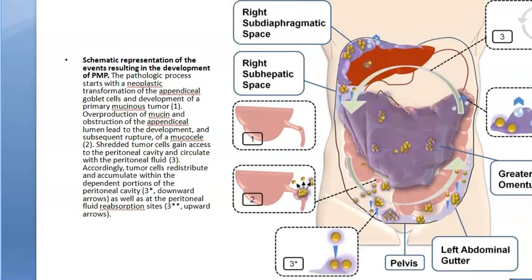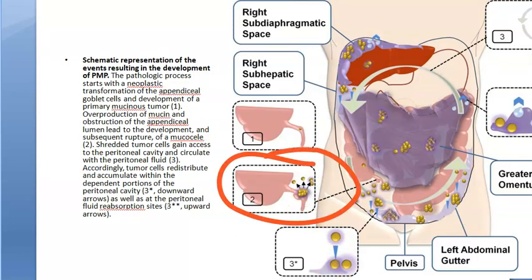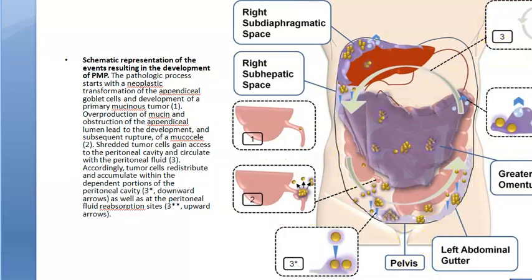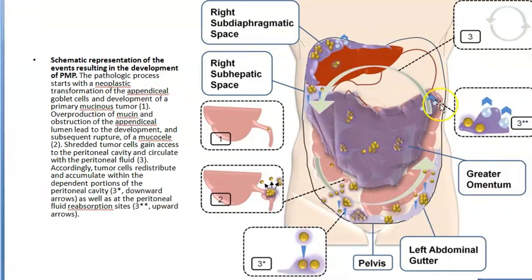From where is it all starting? It starts from the appendix. There is neoplastic transformation of the appendiceal goblet cells and development of a tumor inside the appendix — that is the primary mucinous tumor developing within the appendix. Now this ruptures, and all these mucus-secreting cells are depositing in the abdomen — jelly-like substance everywhere. These tumor cells redistribute and accumulate within the dependent portions of the peritoneal cavity.